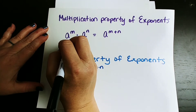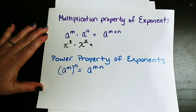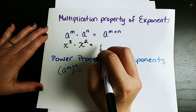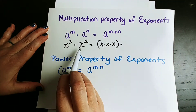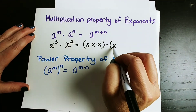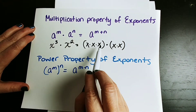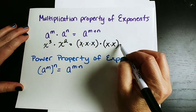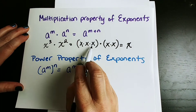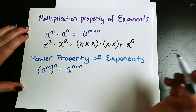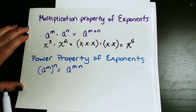If I had x to the third power times x to the second power, let's really break these down and write them in expanded form. X cubed is simply x times x times x, and we're multiplying that by x squared, which is x times x. So altogether we have x times x times x times x times x — five factors of x — so it's x to the fifth. X to the third times x squared is x to the three plus two, or x to the fifth power.